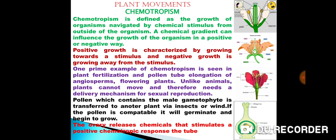Chemotropism is defined as the growth of organisms navigated by chemical stimulus from outside of the organism. A chemical gradient can influence the growth of the organism in a positive or negative way.